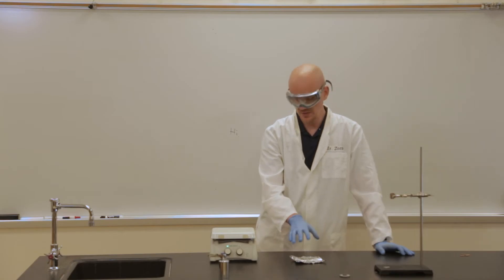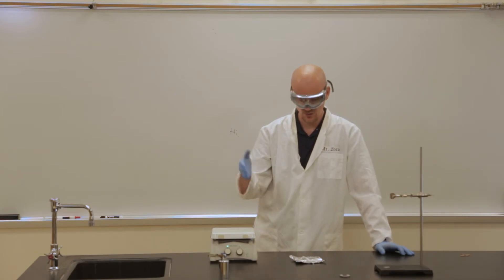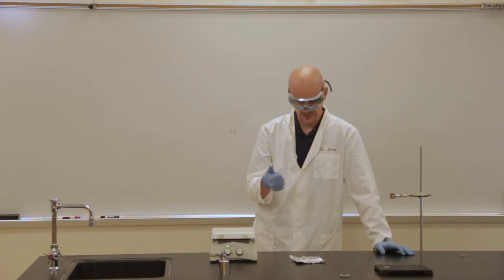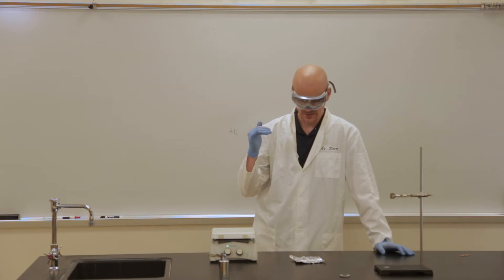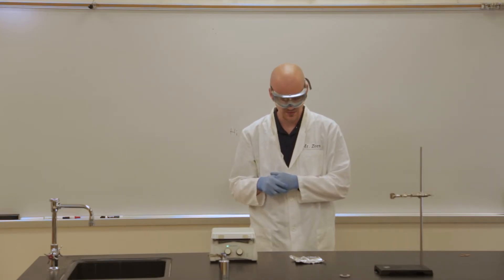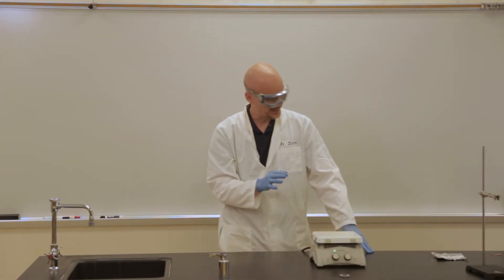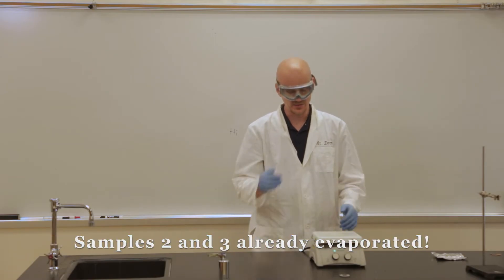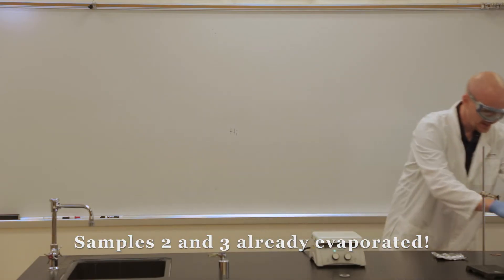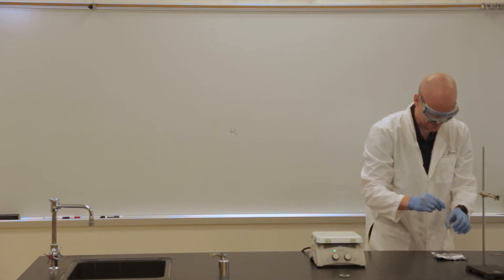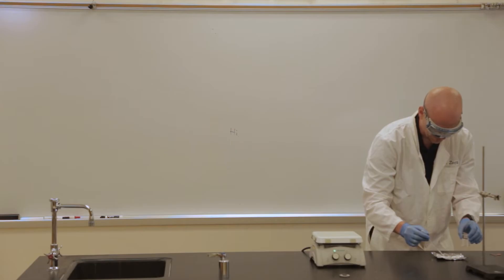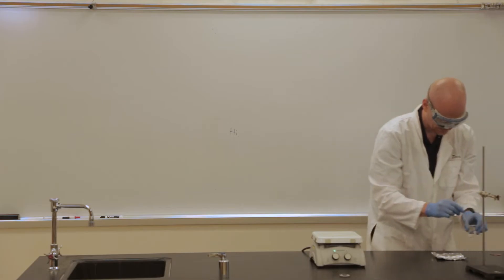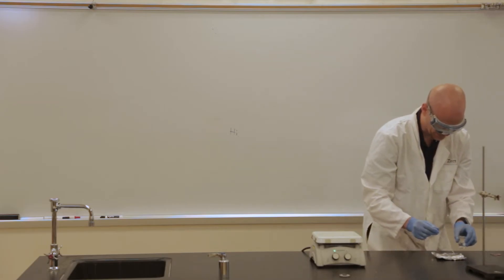I'm going to take this aluminum boat, stick it on the hot plate, and we are going to watch the order that these evaporate in. We're going to find the one that evaporates the quickest and the one that takes the longest, and rank them according to their evaporation rates. As I was getting set up, I noticed that number two and number three have already evaporated before I've even put them on the hot plate, so I'm going to add a couple more drops of each. I still have drops of one and four on my foil.